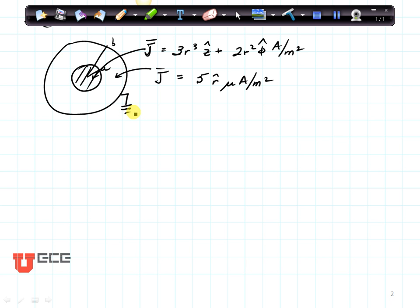The inner conductor is carrying a current of 3r³ in the z direction, plus 2r² in the phi direction, amps per meter squared. The insulating material between the inner conductor and the shield is slightly water soaked, so it has a small conductivity.